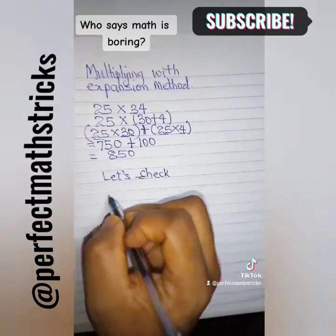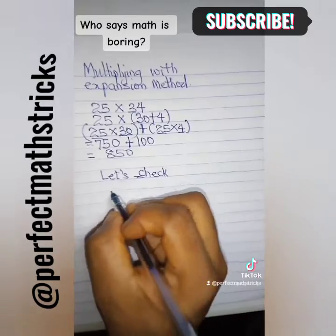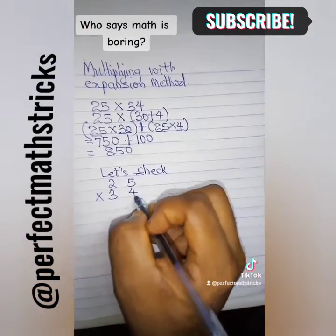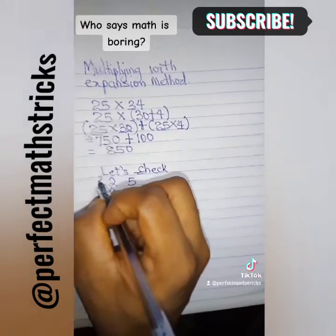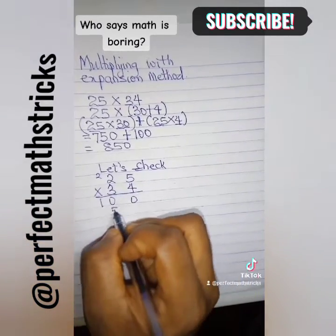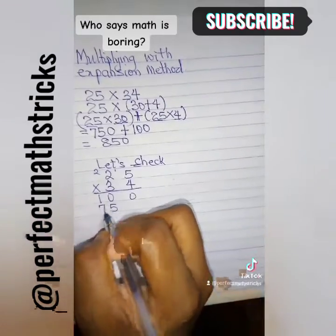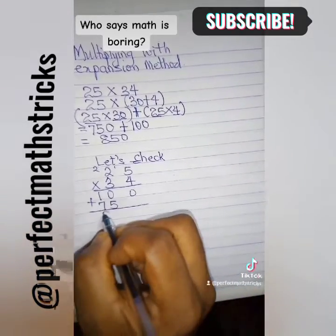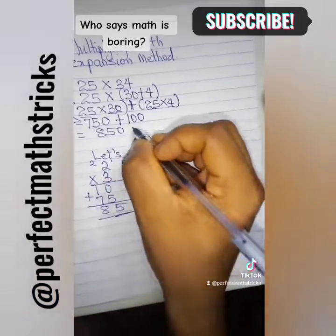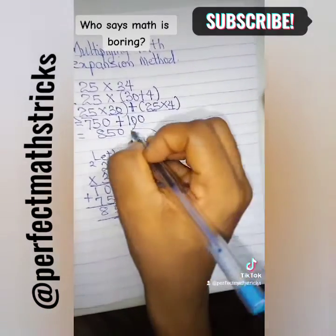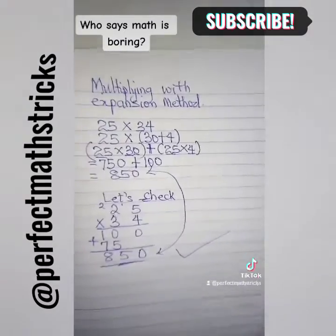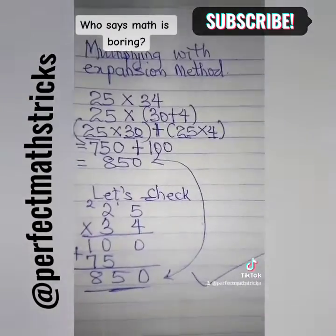Now let's check: 25 times 34. 4 times 5 is 20, 4 times 2 is 8 plus 2 is 10, 3 times 5 is 15, 3 times 2 plus 1 is 7. When you add it up you get 850 — voilà, the correct answer is 850.